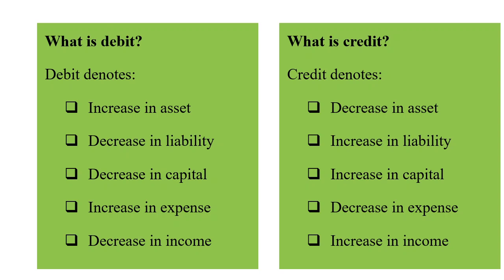What is debit? Debit denotes increase in asset, decrease in liability, decrease in capital, increase in expense, and decrease in income. What is credit? Credit denotes decrease in asset, increase in liability, increase in capital, decrease in expense, and increase in income.